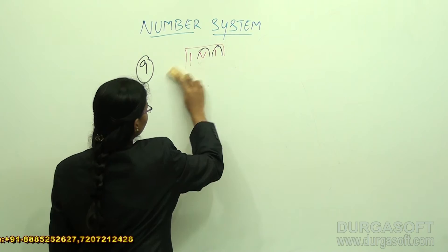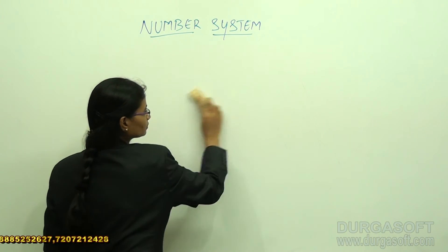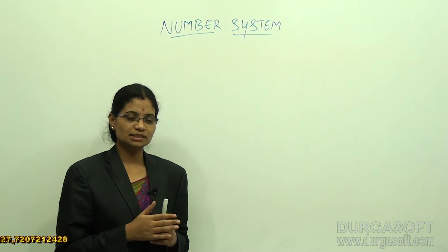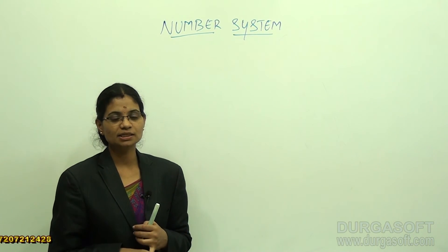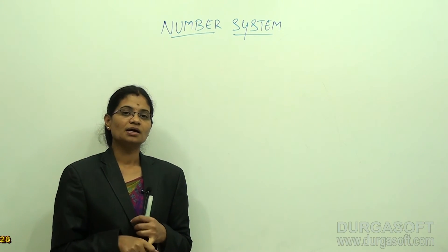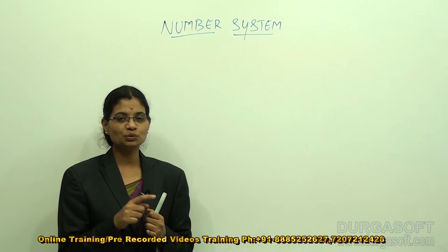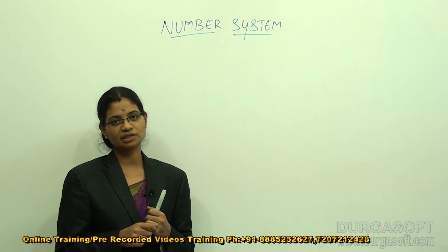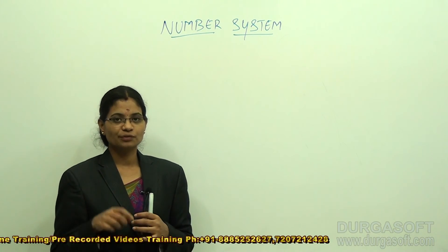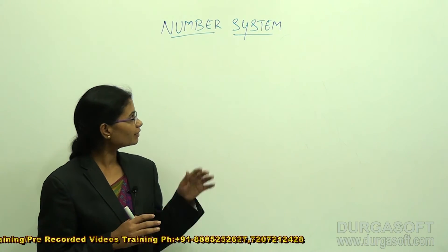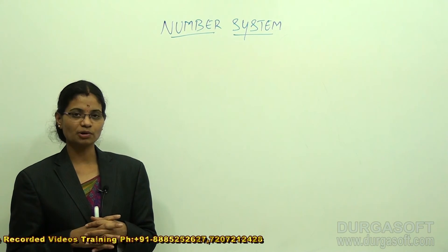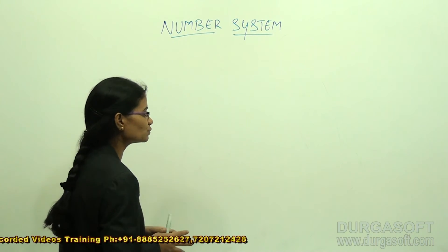An important point for both number system and number series: you should know all squares from 1 to 30 and all cubes from 1 to 20. Knowing squares and cubes makes it easy to evaluate problems in both number system and number series.